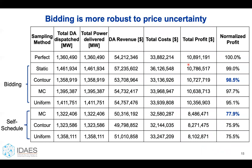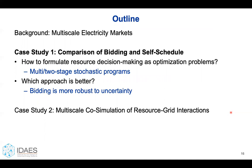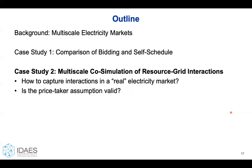We also see this in rolling horizon simulation results using a year of data from the California market. With bidding, you can achieve 99% of the perfect information revenue. With self-scheduling, we could only achieve 78%. These results show that if you're assessing the economics of an energy system with historical data under uncertainty, we really advocate for using bidding.